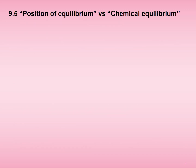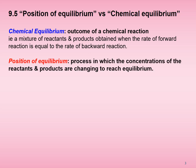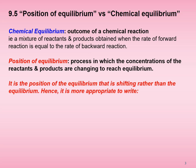What is the difference between position of equilibrium and chemical equilibrium? Chemical equilibrium is about the outcome of a chemical reaction — that is, a mixture of reactants and products obtained when the rates of forward and backward reactions are equal. Position of equilibrium, on the other hand, refers to the process in which the reactant and product concentrations are changing to reach equilibrium. It is the position of the equilibrium that is shifting rather than the equilibrium. Hence, it is more appropriate to say the equilibrium position shifts to the left or right.